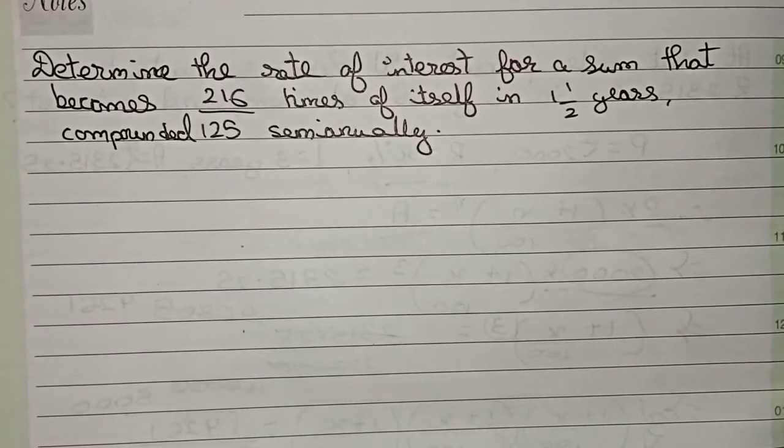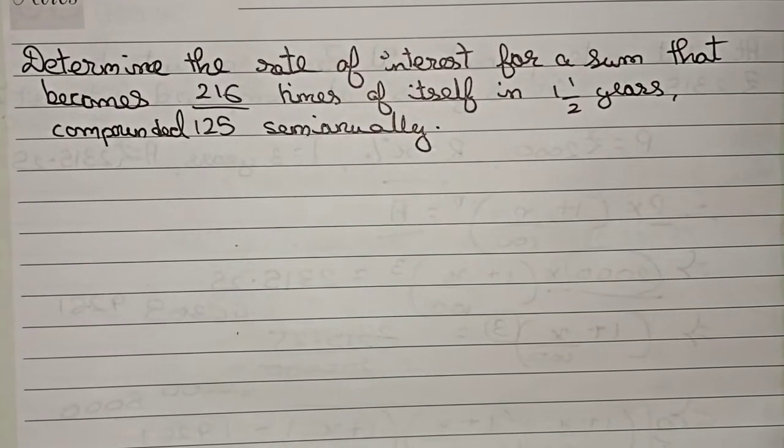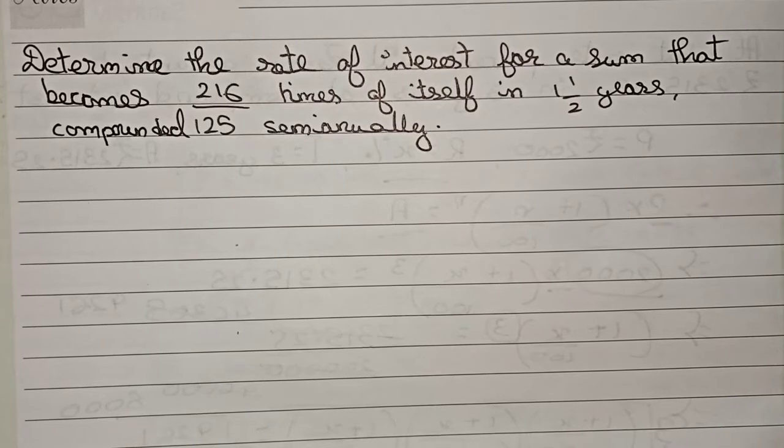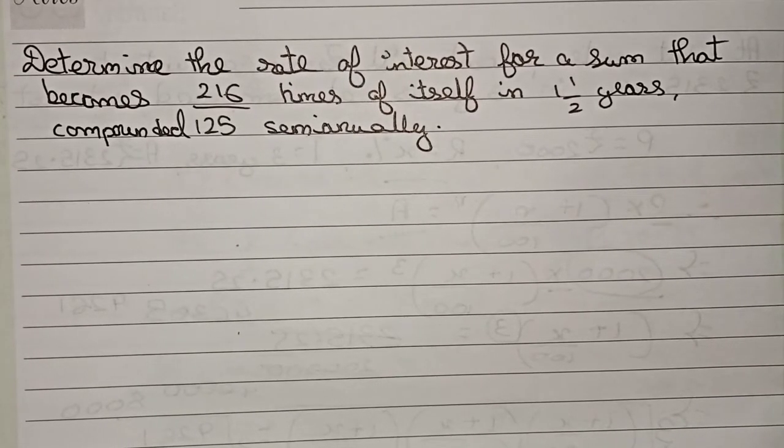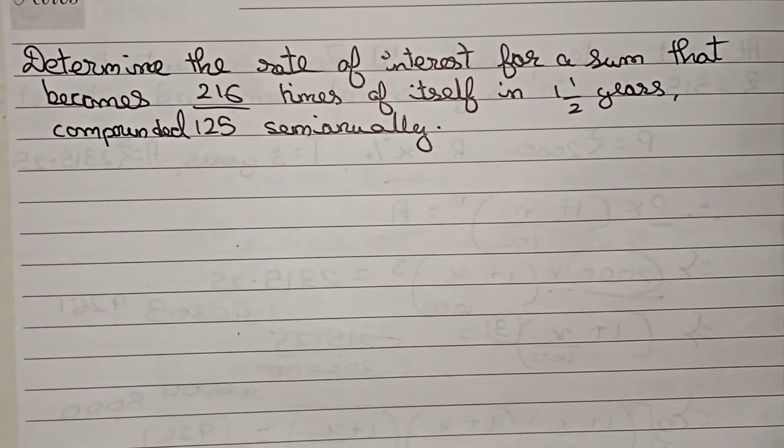Hello guys, welcome to this video. In this video, the question is: determine the rate of interest for a sum that becomes 2.16 by 1.05 times of itself in 1.5 years compounded semi-annually.